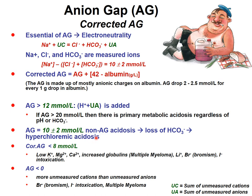Non-anion gap acidosis is associated with hyperchloremic acidosis because bicarbonate is exchanged for chloride. A corrected anion gap below normal can be due to low potassium, magnesium, calcium, increased cationic proteins such as in multiple myeloma, lithium, bromidism, or certain intoxications — all can decrease the anion gap, sometimes to negative values.